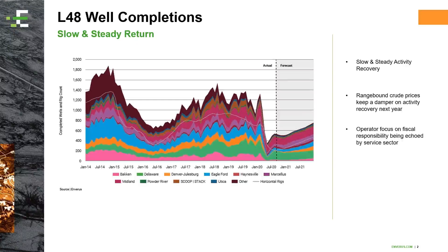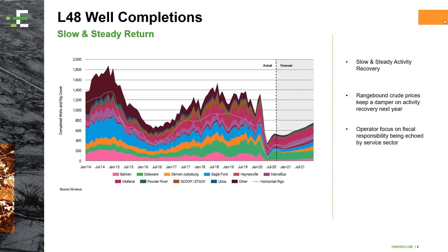With the unprecedented activity drop we saw in March, April, and May, activity has recovered to where it's really going to stabilize for the rest of the year. We don't expect the same types of drops this Q4 that we've had for the past two years. Any kind of slowdown will mainly be due to winter seasonality. Moving into next year, our macro group sees prices range-bound at about $50 Brent.